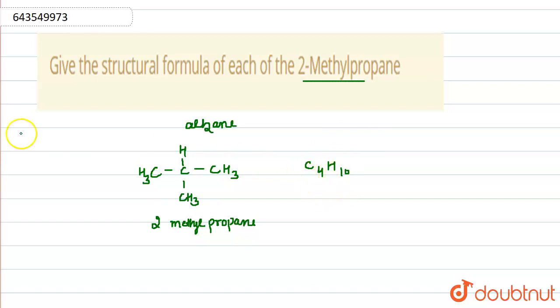And by seeing this molecular formula, we can find out this is an alkane because the general formula of alkanes is CnH2n+2.